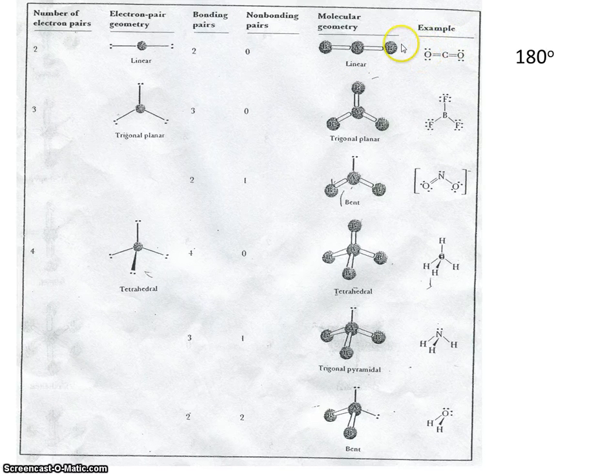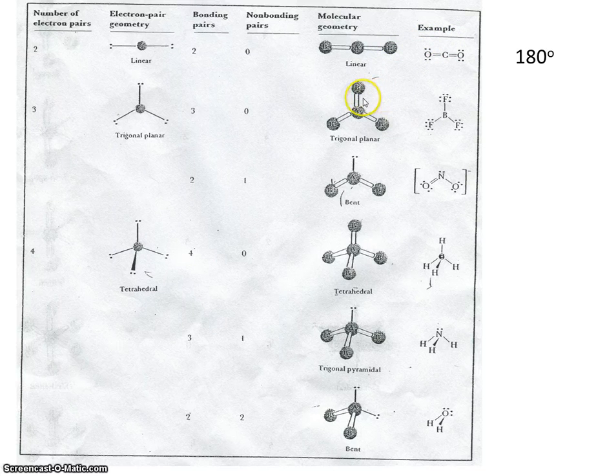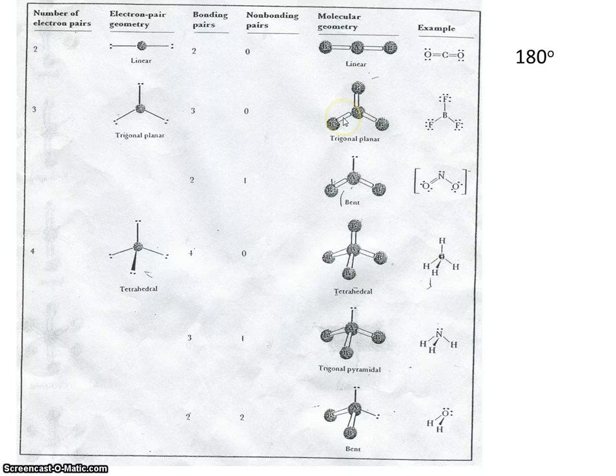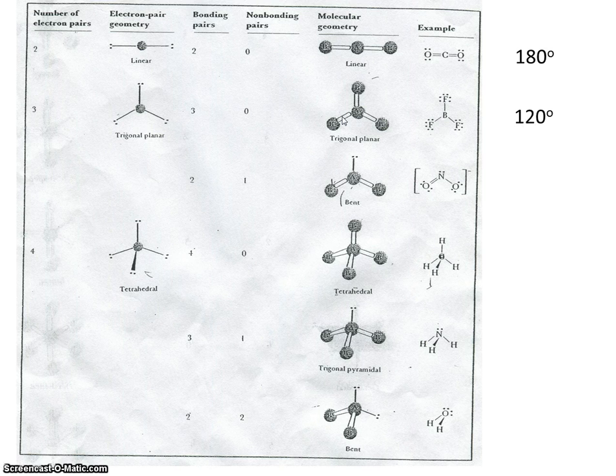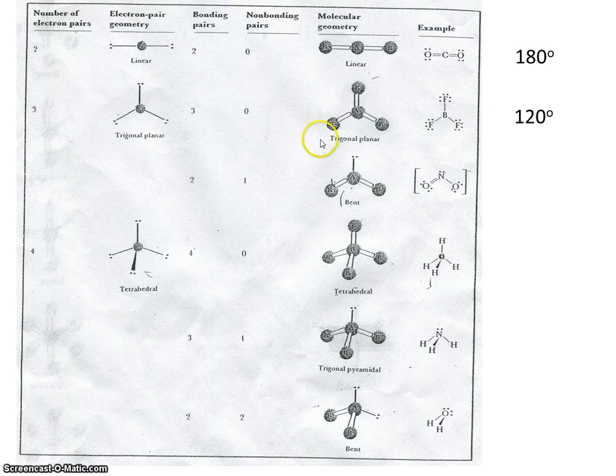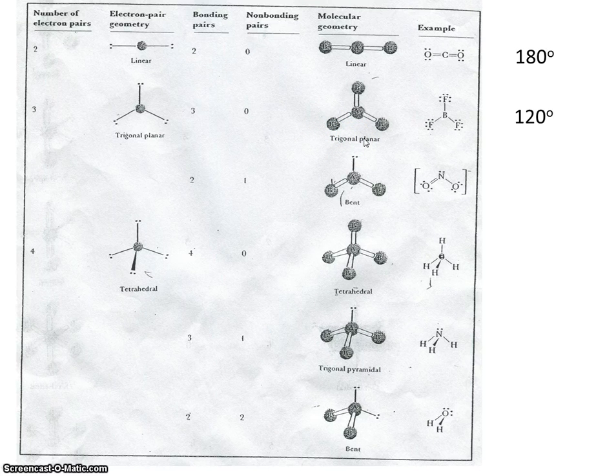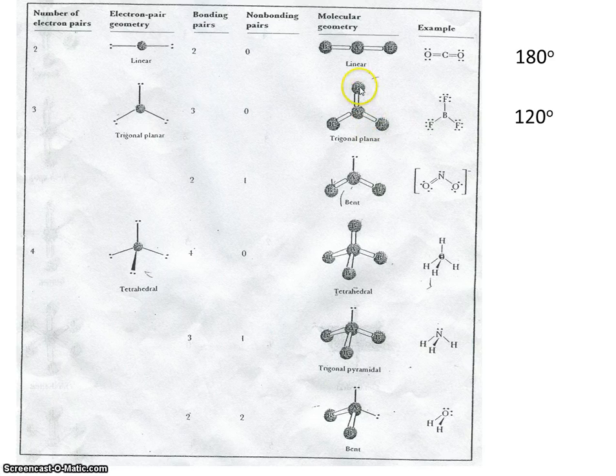The next molecule has three electron pairs. One, two, three. The way that those three electron pairs get as far apart as possible is by taking on an angle measure of 120 degrees. The name of this shape is trigonal planar. Trigonal, because it looks like a triangle, and planar, because it occupies a single plane. All four of these atoms are in the same plane.